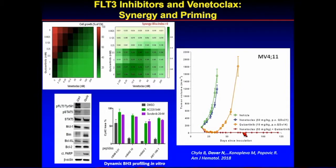So we said: if FLT3-ITD is a resistance mechanism, why can't we combine venetoclax with a FLT3 inhibitor, at least in patients who have FLT3-ITD? You can see here a synergy plot of the combination of Venetoclax and Quizartinib — you get the same with gilteritinib or other FLT3-ITD inhibitors. The mechanism: Quizartinib inhibits FLT3 signaling, as expected. It also induces BIM — recall that BIM is one of the BH3-only proteins required to neutralize not only BCL2 but other anti-apoptotic family members. It also reduces MCL1 levels, which was thought to be the resistance mechanism.